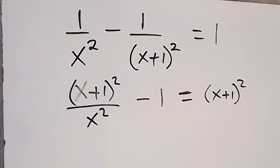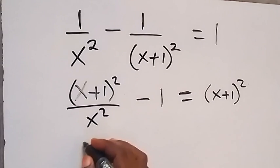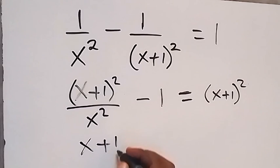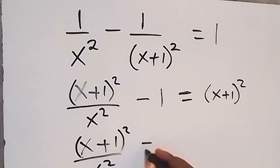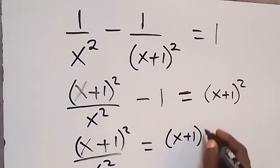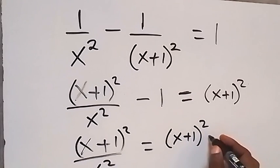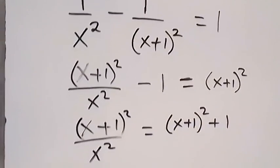Then, also from here, let's take minus 1 to this side. This will become x plus 1 over x, all squared over x squared, equals to x plus 1 all squared, then plus 1. Taking minus 1 to that side will become plus.